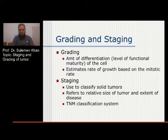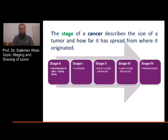The TNM classification system is a system of staging. The stage of a cancer describes the size of a tumor and how far it has spread from where it originated. Stage 0 is carcinoma in situ — an early form. Stage 1 is localized. Stage 2 is early, locally advanced. Stage 3 is late, locally advanced. Stage 4 is metastasized.